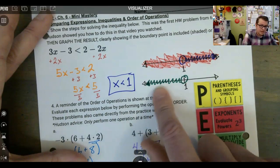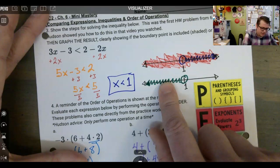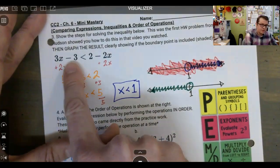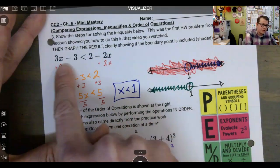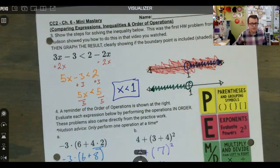If I pick any number less than one, one is not included. But if I pick any number less than one and plug it into the original inequality, it should come out to be true. It will come out to be true, assuming that we've done our math correctly.